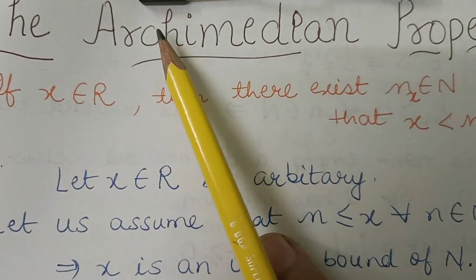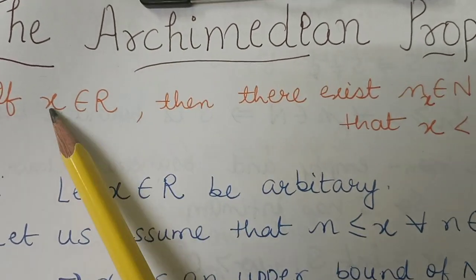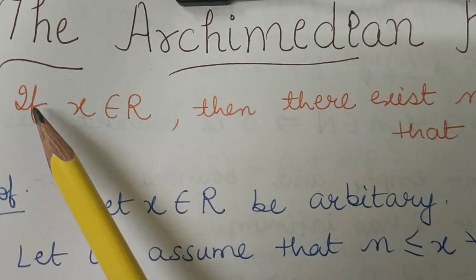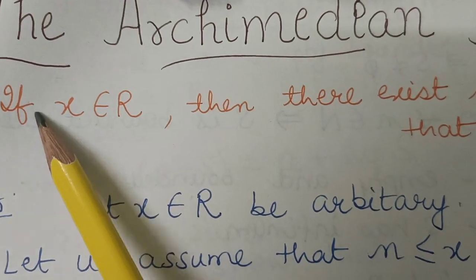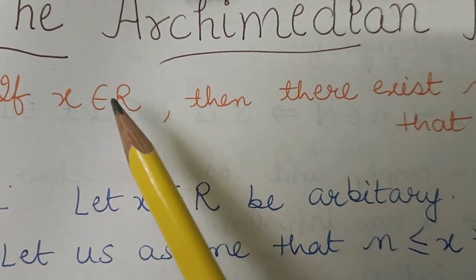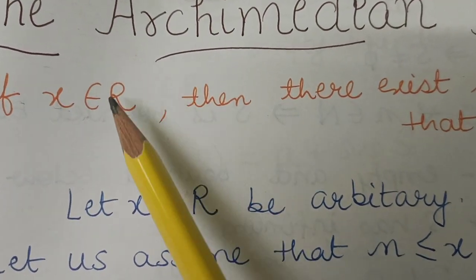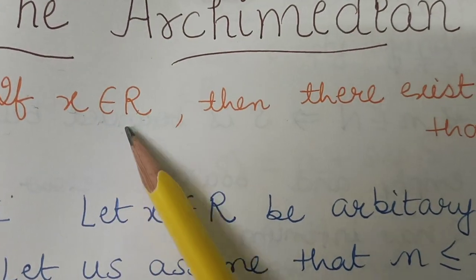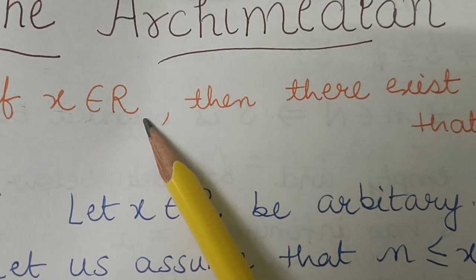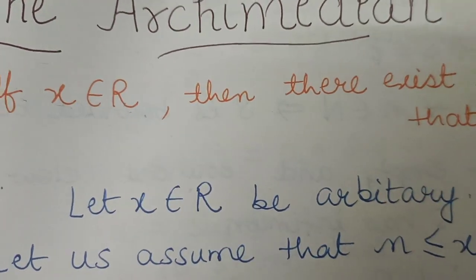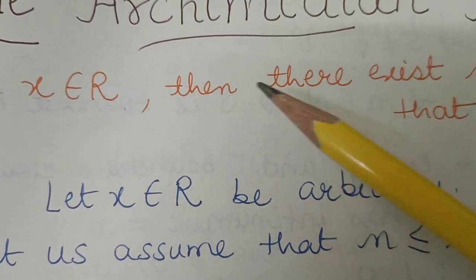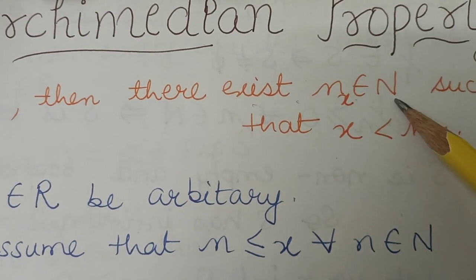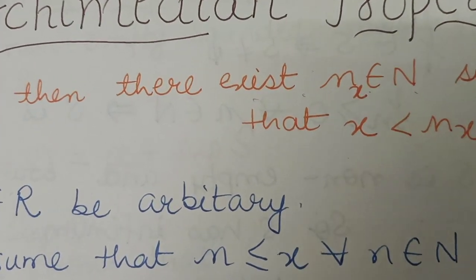So the Archimedean property states that if x belongs to the real numbers, then there exists n_x belonging to the natural numbers such that n_x is greater than x.